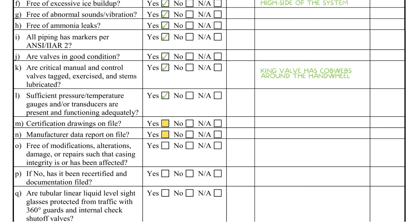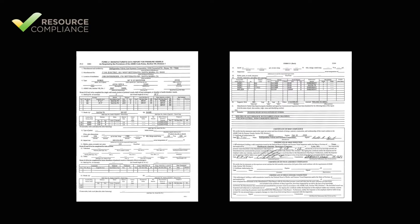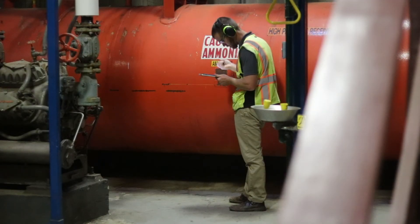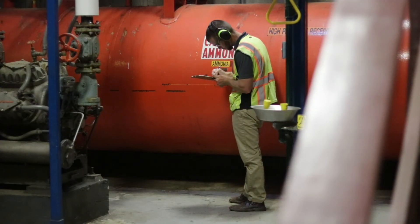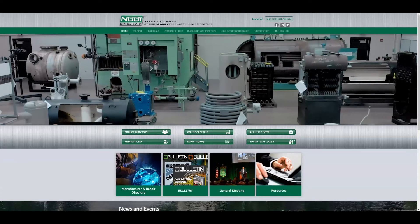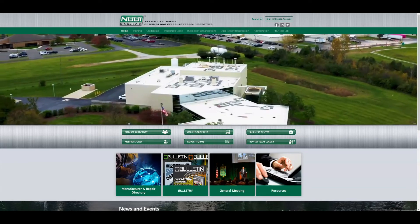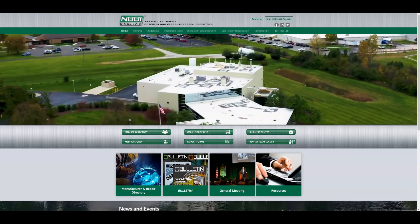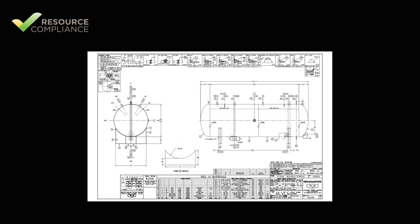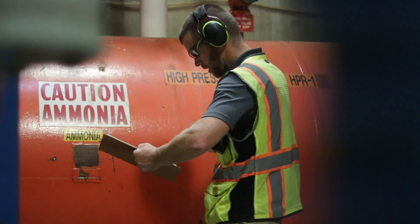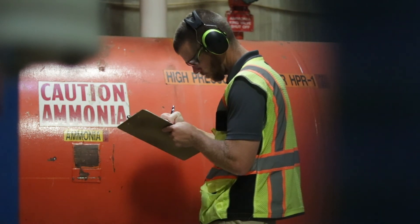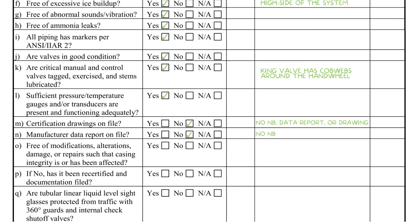Items M and N ask if the vessel's certification drawings and manufacturer data report are on file. The data report, commonly referred to as a U1 or U1A form, we like to call the vessel's birth certificate, as it documents the important vessel characteristics when it was manufactured. For vessels registered with the National Board, the data report can be obtained from the National Board website for a small fee. The certification drawings are provided by the vessel manufacturer and should be available on site. In this example, the certification drawings and data report were unavailable and since the vessel was not registered with the National Board, the only means to obtain the documents will be from the vessel manufacturer.